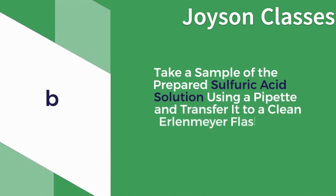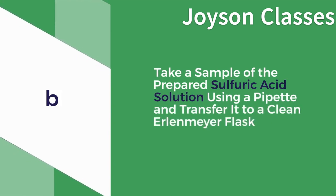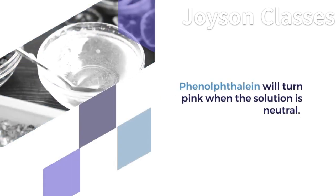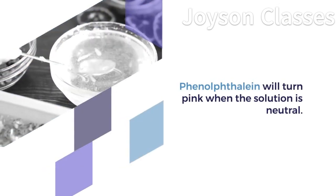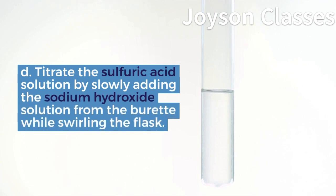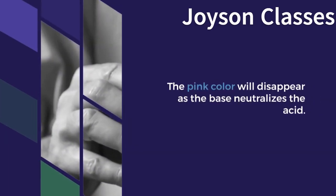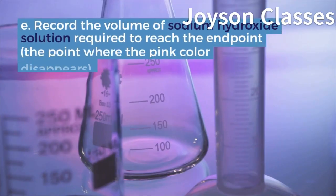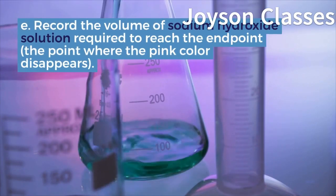B. Take a sample of the prepared sulfuric acid solution using a pipette and transfer it to a clean Erlenmeyer flask. C. Add a few drops of phenolphthalein indicator solution to the flask. Phenolphthalein will turn pink when the solution is neutral. D. Titrate the sulfuric acid solution by slowly adding the sodium hydroxide solution from the burette while swirling the flask. The pink color will disappear as the base neutralizes the acid. E. Record the volume of sodium hydroxide solution required to reach the endpoint — the point where the pink color disappears.